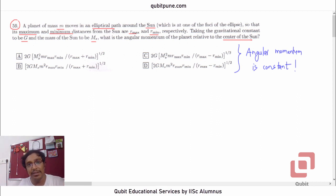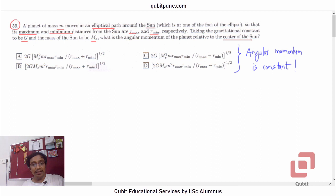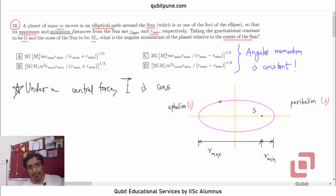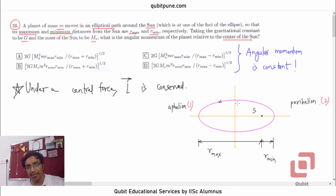Angular momentum also doesn't change with position, and that is indeed true. That is a fundamental result in Newtonian mechanics: under a central force, angular momentum is conserved. Is gravitational force a central force? Yes, because it is always directed along the line joining the two objects — the sun and the planet in this case. So it is a central force.